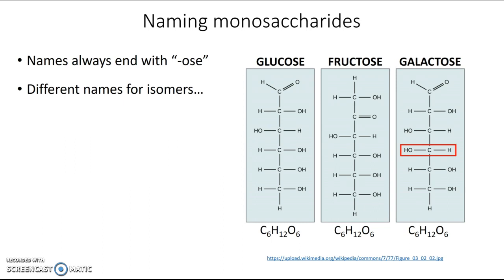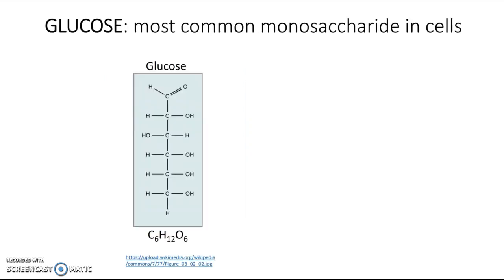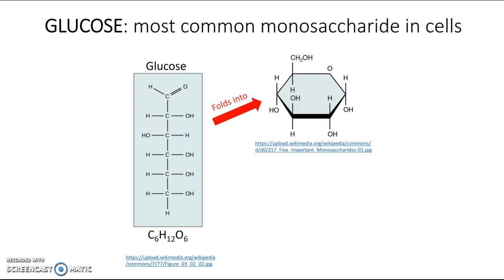Glucose is really important in biology because it's the sugar that cells take up most efficiently. A lot of the food we eat gets broken down into glucose, which is what we absorb from our digestive system into our bloodstream to feed our cells — so when you hear the term "blood sugar," we're actually referring to glucose. In a wet environment like inside our bodies, glucose folds up into a ring structure.